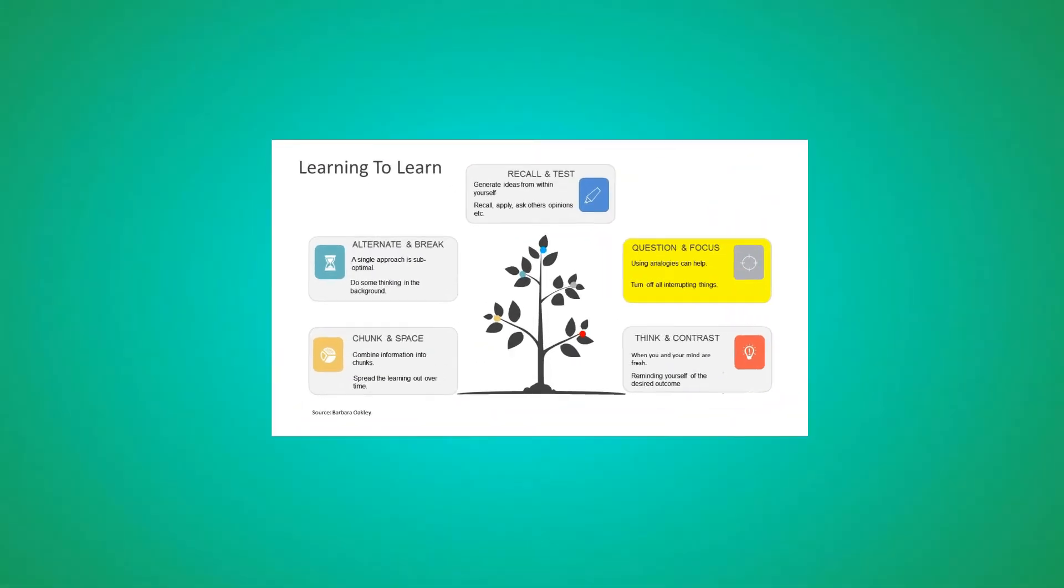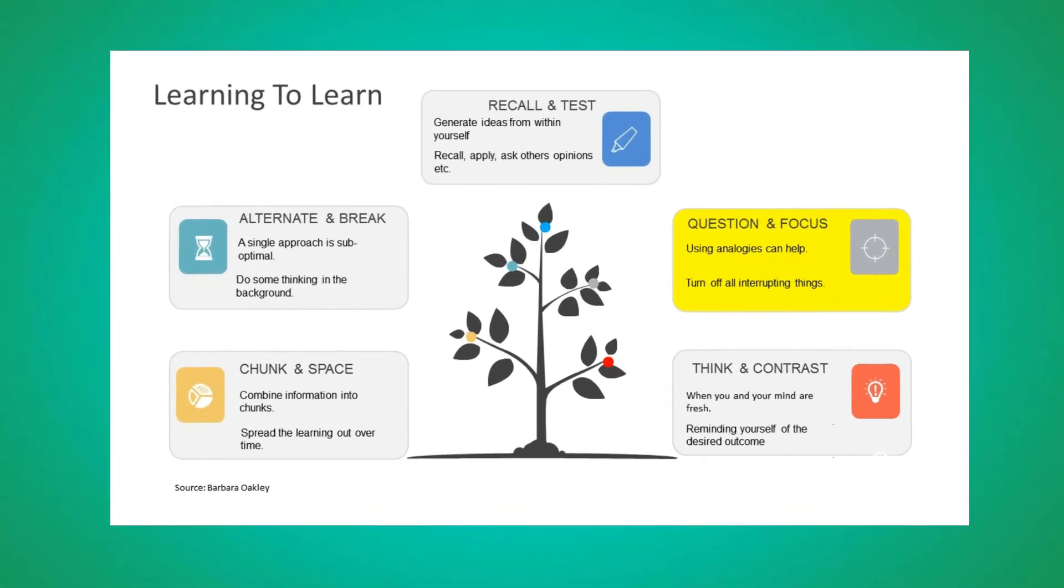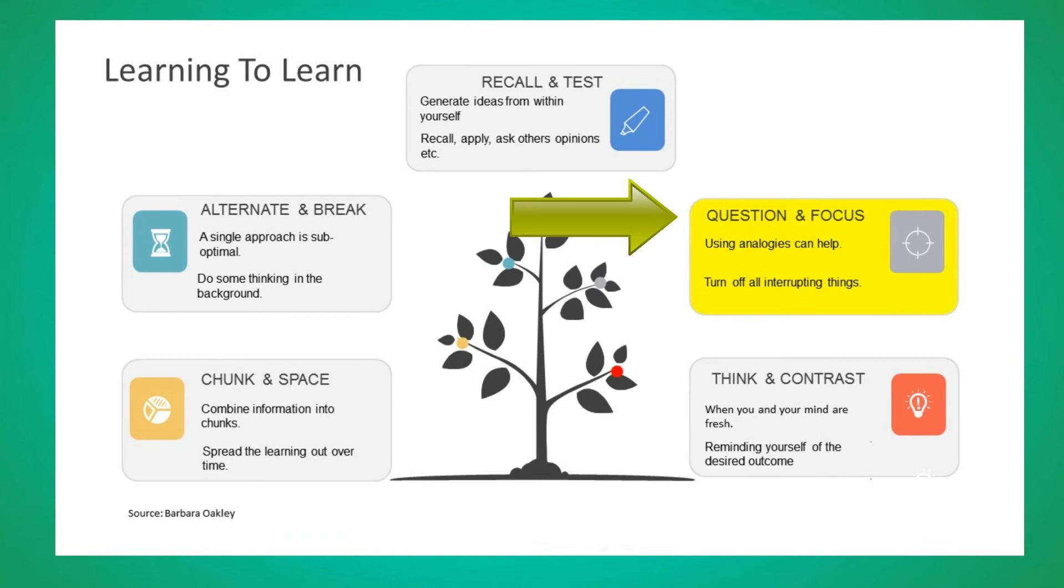Rule number five is called questioning. To help you question, try to consider how you could explain a problem or a challenge. Try to explain this in a way that a ten-year-old could understand. Using analogies can also help you when questioning.